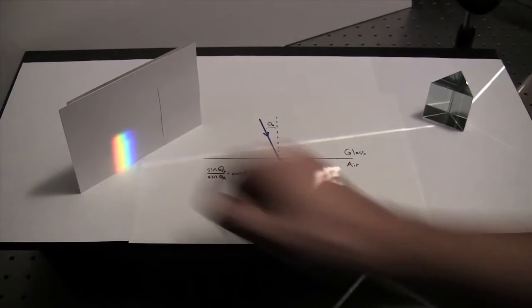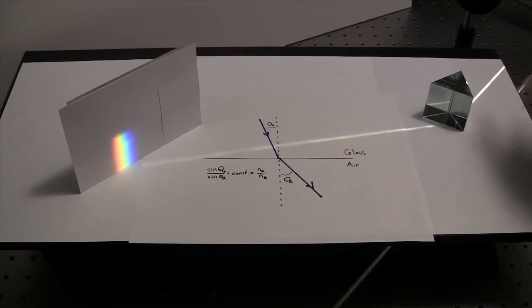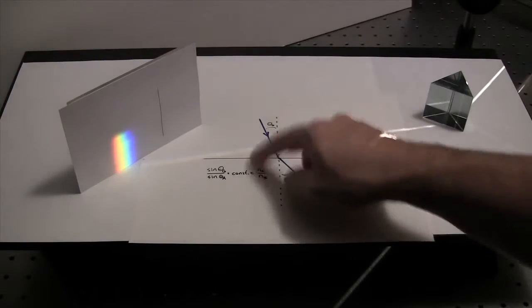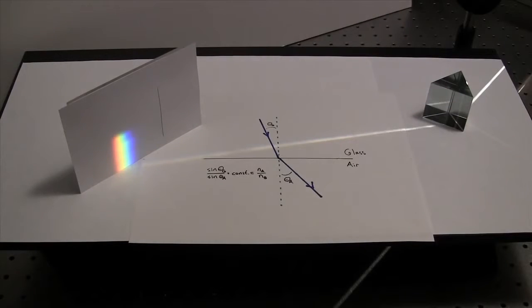In the direction that the colors were spread, the pattern was much wider than it should be based on the system geometry if light obeyed this fixed sine ratio law.